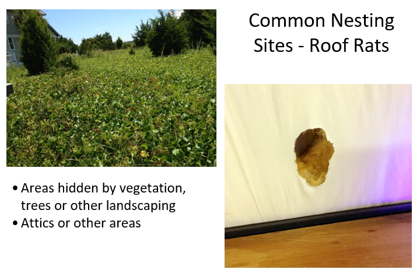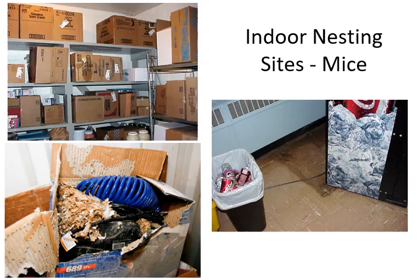Roof rats like areas hidden by vegetation and trees or landscaping, and they prefer higher areas. It's not uncommon to see them in attics or up in trees. The picture on the right shows damage caused by a roof rat chewing into something.